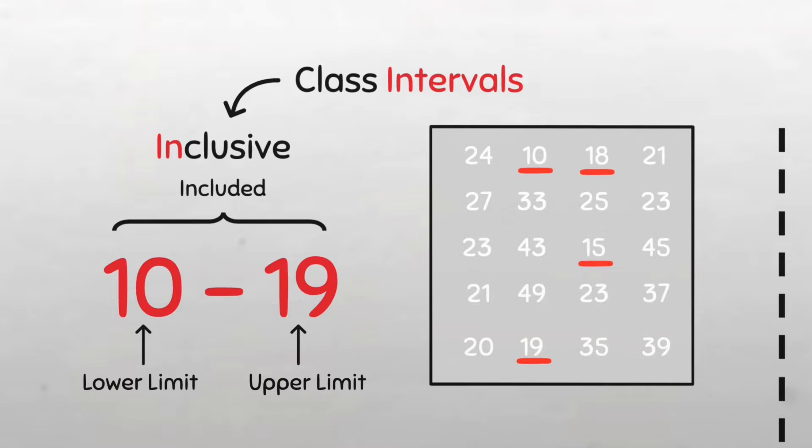So you see, for this type of classification, both the lower limit and the upper limit are included in the class and any value higher than 19 will be included in the next class. This inclusive type is a simple method of classification and it's useful when the data we are grouping is only in whole numbers, i.e. when we have discrete data.